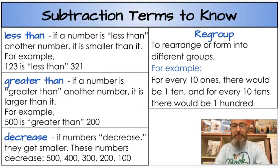Next we have these terms. Less than - if a number is less than another number it is smaller than it. For example, 123 is less than 321. Next we have greater than. If a number is greater than another number it is larger than it, it's bigger. For example, 500 is greater than 200, it's bigger than it, so it's greater than.